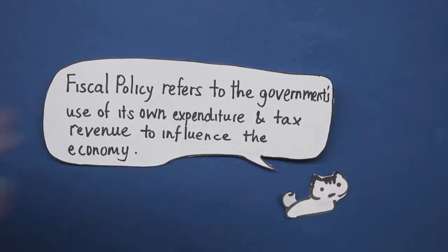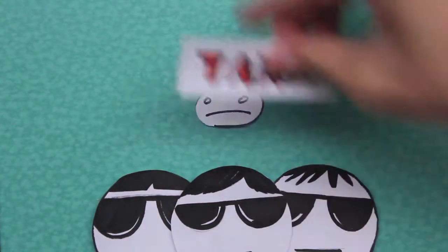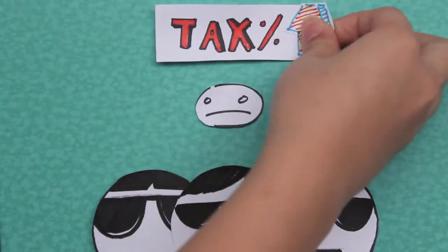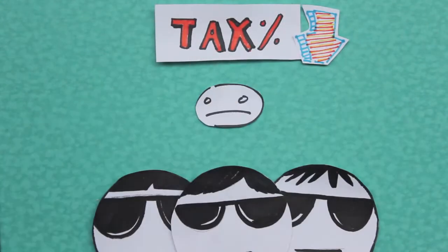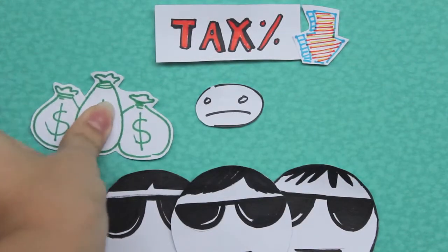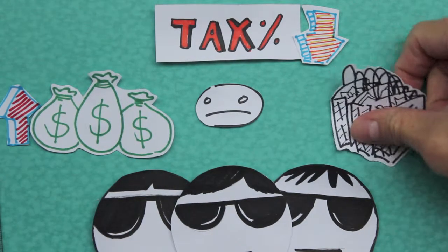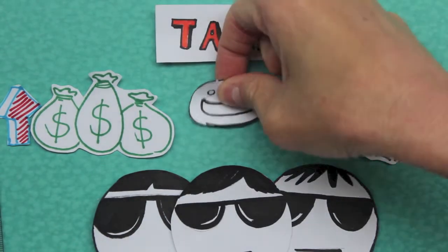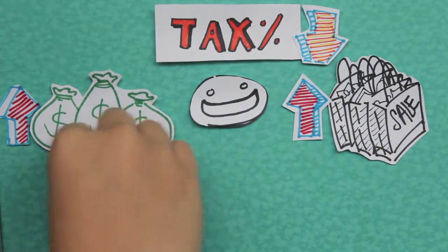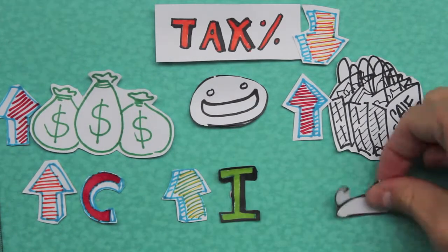But how does fiscal policy help to reduce unemployment? In the direct taxes component, when personal income and corporate taxes are high, people are sad. But when the government reduces such taxes, disposable income and profits for corporations increase. This increases purchasing power for people and increases the amount of money corporations can invest in other areas. This means that the consumption component and the investment component of the AD increases.